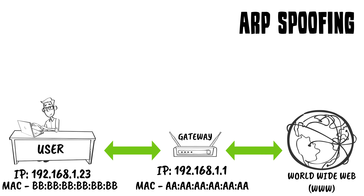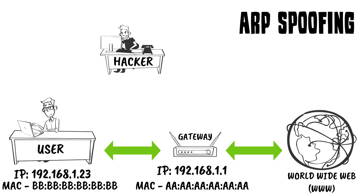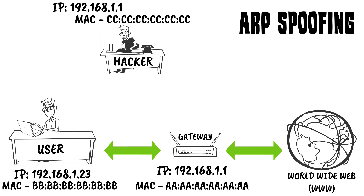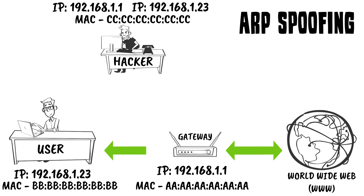In an ARP spoofing attack, a hacker who has an IP address of 192.168.1.37 and a MAC address of a series of C's will poison the IP table and tell the user that he is the gateway with the IP address of 192.168.1.1, and tell the gateway that he is the user with the IP address of 192.168.1.23. This way all communication gets routed through the hacker's machine, making the hacker the man in the middle.